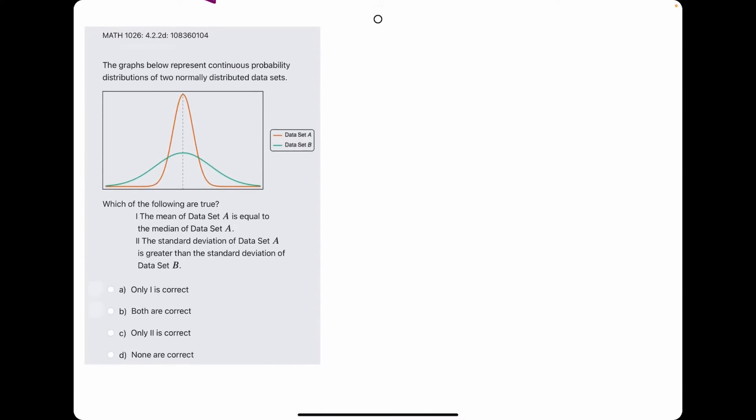In this case, they say the mean of A is equal to the median of A. That is, of course, true, because the mean and median for everything here is equal. Then they say the standard deviation of data set A is greater than that of B. This is a false statement because they're saying A's data set has a greater standard deviation, which is not true because it's more narrow. B, the green curve, has a greater standard deviation. So it looks like just one is correct here.